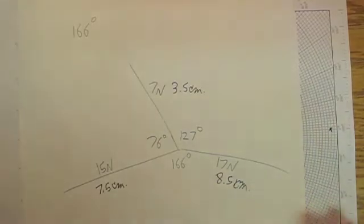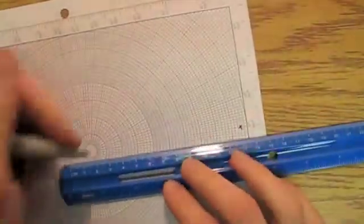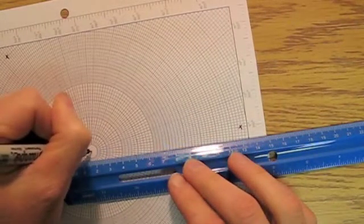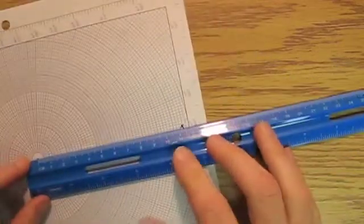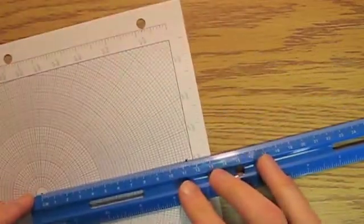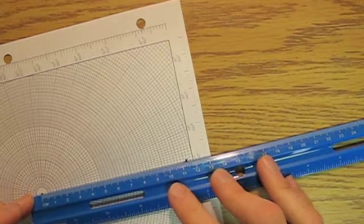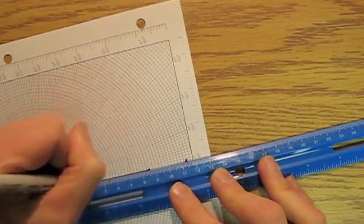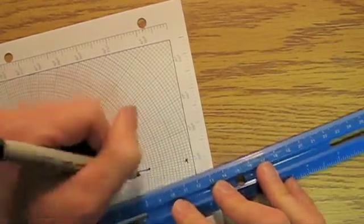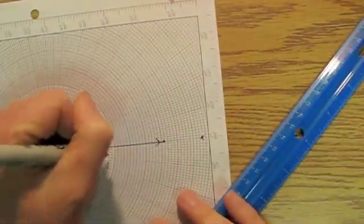And then 15 newtons is going to be 7.5 centimeters. And they all turned out to be odd, but that's okay. So what I'm going to do is from my center, I'll just kind of mark that right there. From my center, I'm going to go out here 8.5 centimeters.